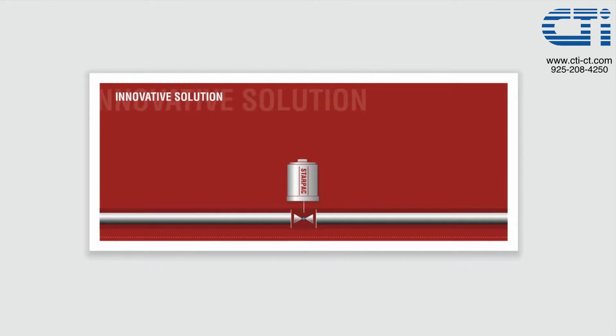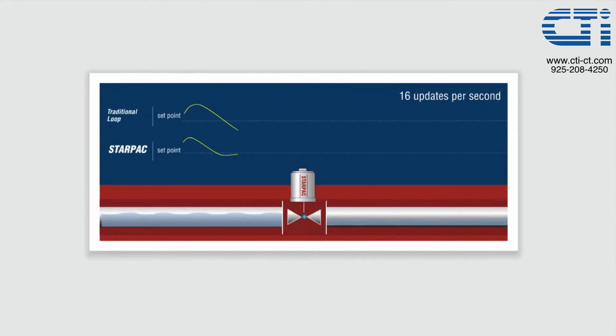The StarPak is a complete system that measures and controls the flow. The onboard PID controller updates the process variable and set point and adjusts the position of the final control element at an incredible rate of 16 times per second.